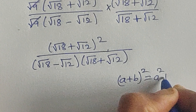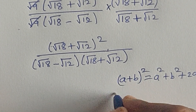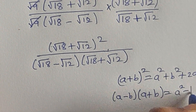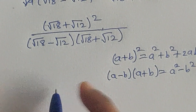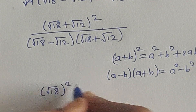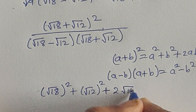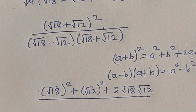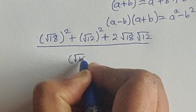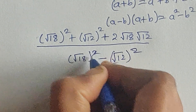In the numerator, this is in the form of (a + b)² = a² + b² + 2ab. In the denominator, this is in the form (a − b)(a + b) = a² − b². Using these formulas, the numerator becomes: square root of 18 squared, plus square root of 12 squared, plus 2ab; and the denominator becomes square root of 18 squared minus square root of 12 squared. The squares and square roots cancel.